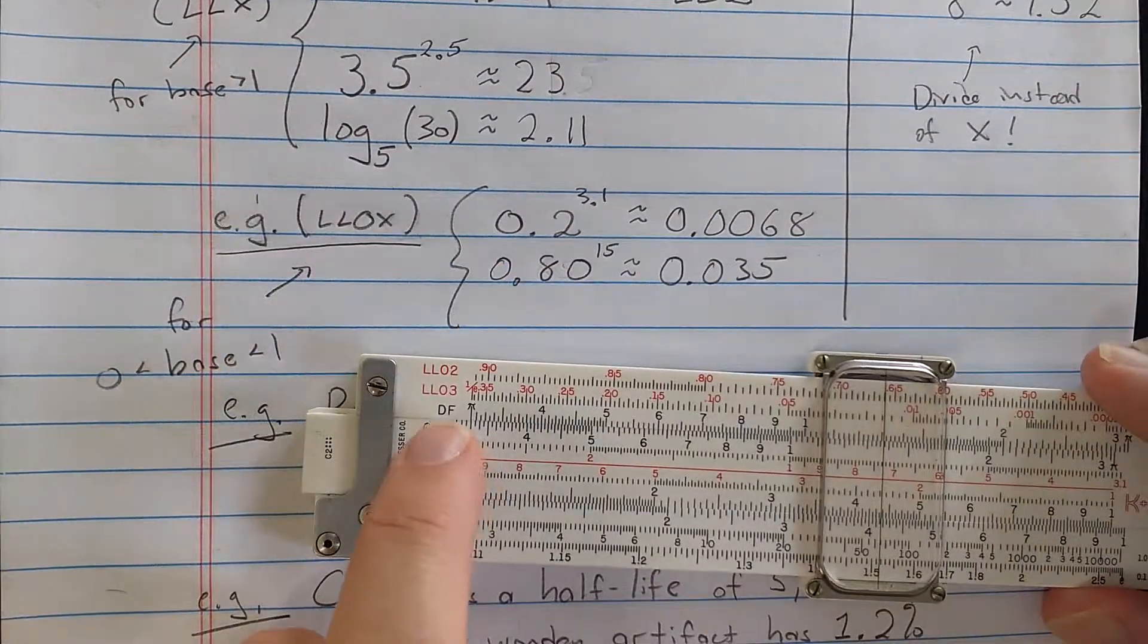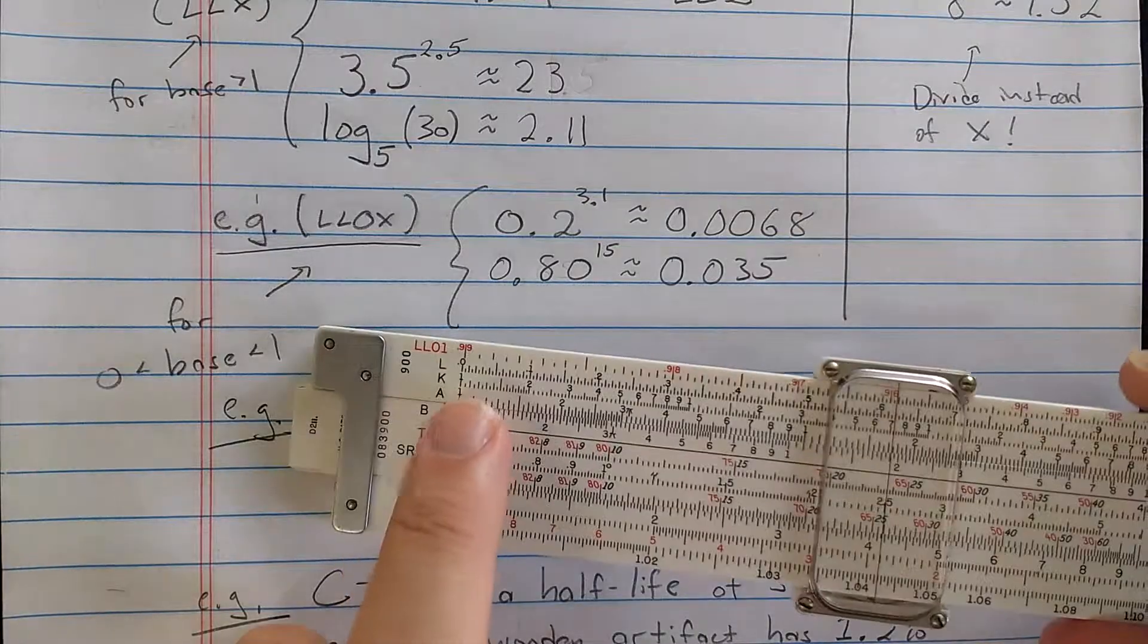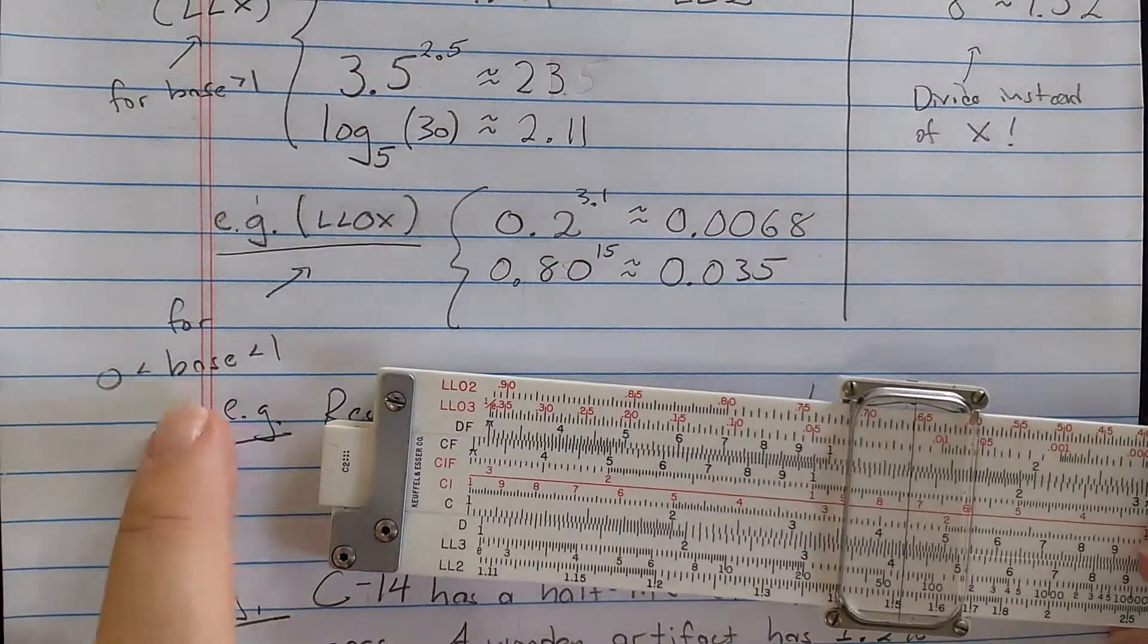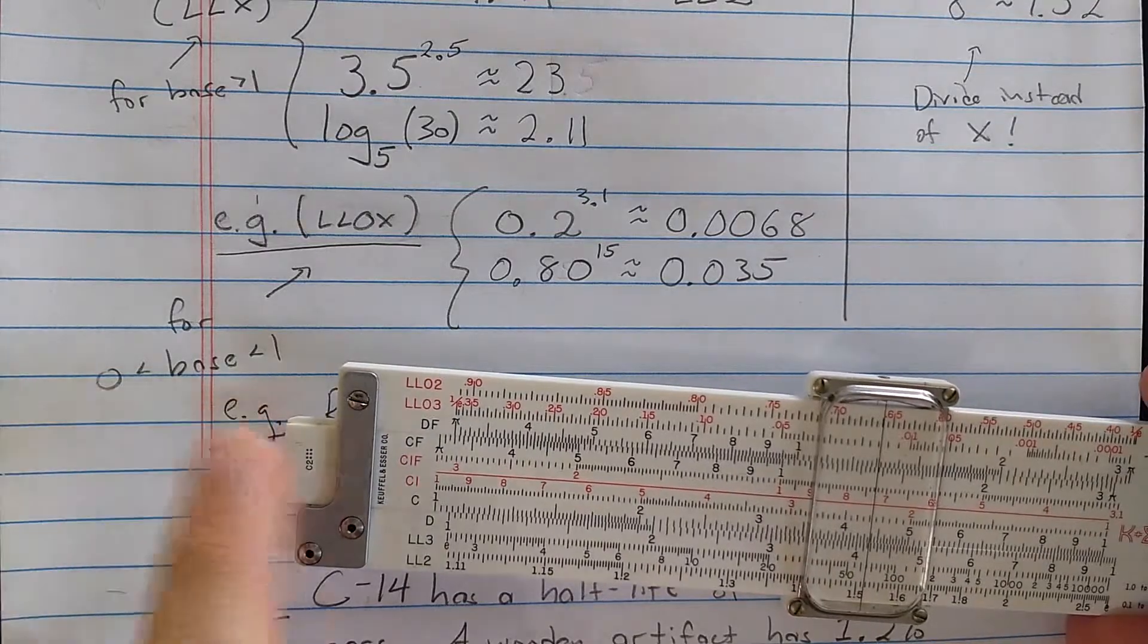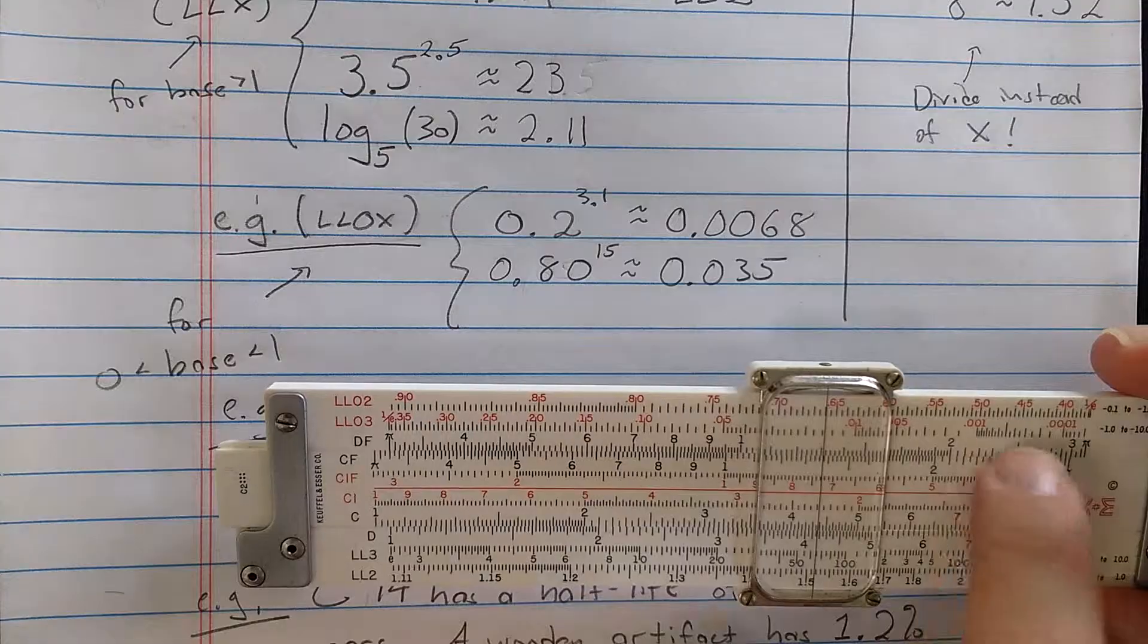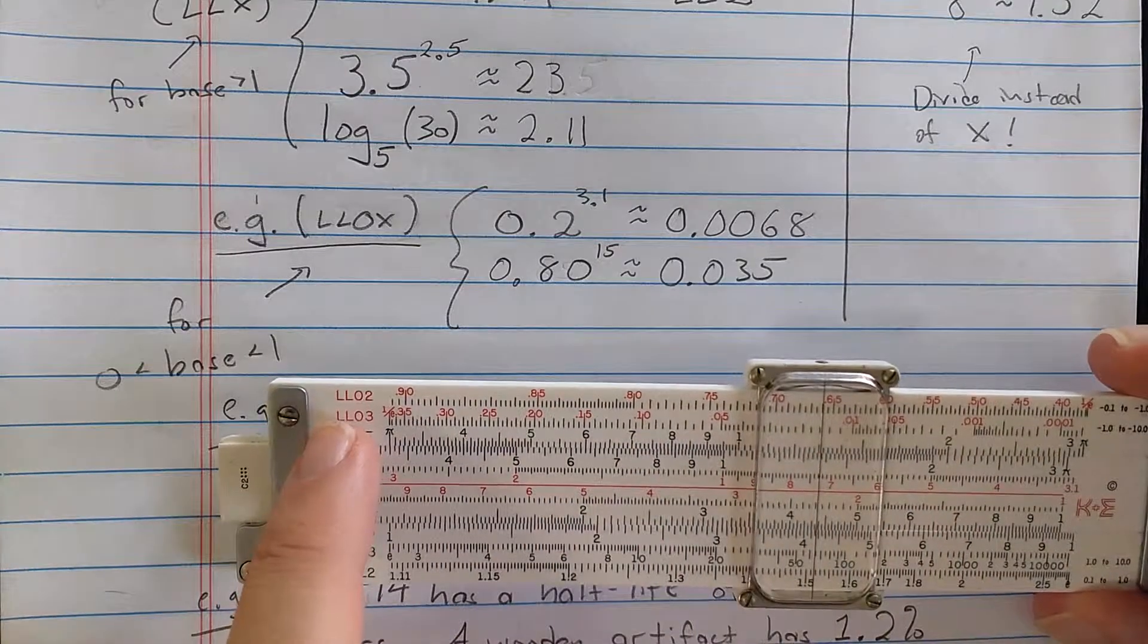Now, let's look at the ones which are marked with a 0 there. These are for bases between 0 and 1. So essentially exponential decay, you can see at the end here, instead of exponential growth. And this scale has numbers reading backwards.